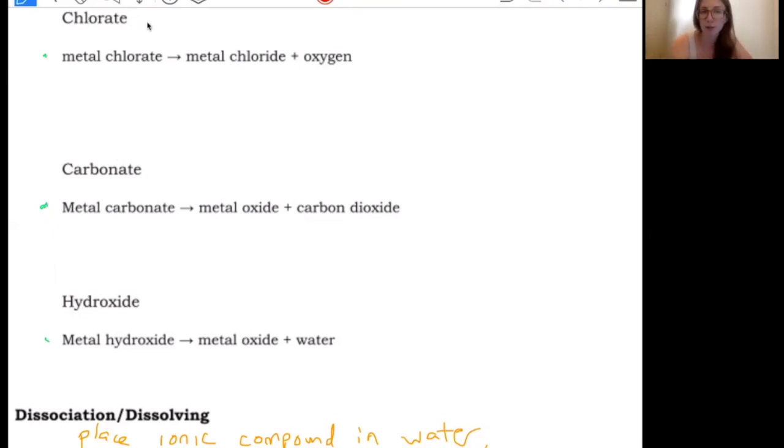So a chlorate decomposition always starts with a metal chlorate, meaning some metal, any metal bonded to chlorate. Chlorate is a polyatomic ion that you should know. It's ClO3 and it has a negative one charge. So anything chlorate: lithium chlorate, aluminum chlorate, magnesium chlorate, metal chlorate is heated because we're still talking about a decomposition.